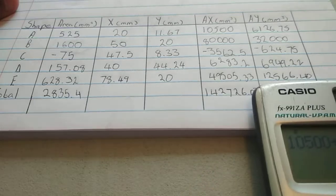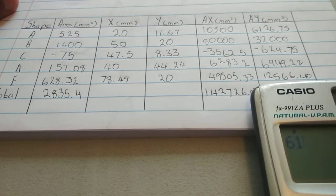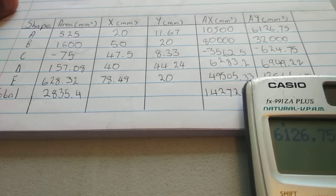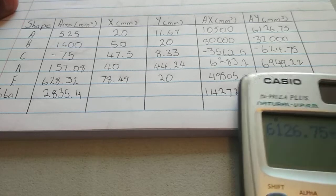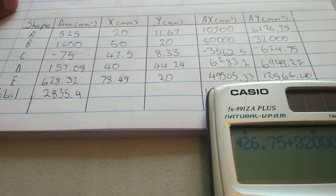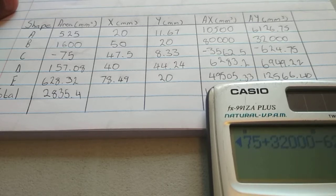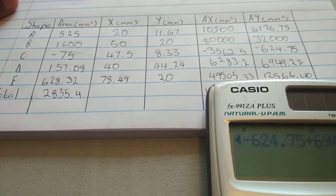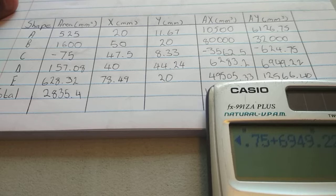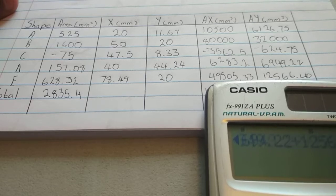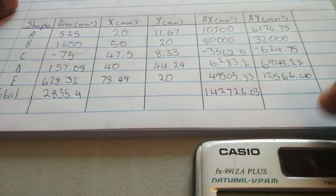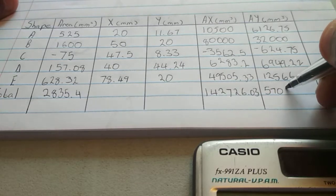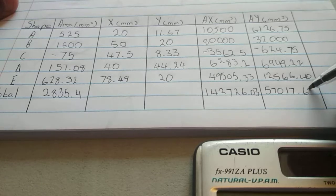Add these ones here: 6126.75 plus 32 minus 624.75 plus 6949.22 plus 12566.40. That equals 57017.62.